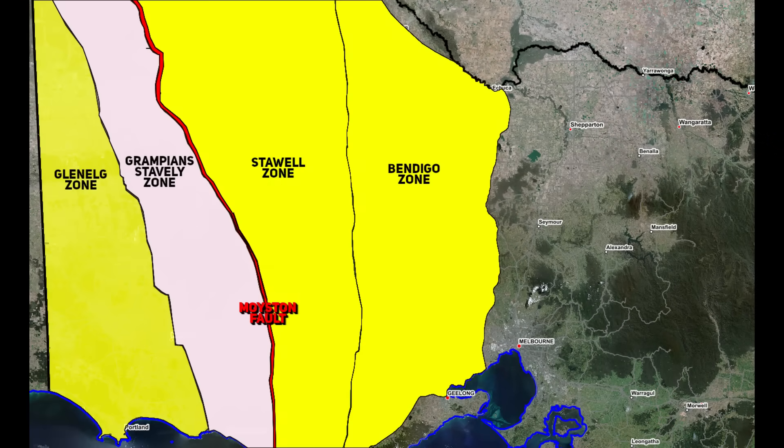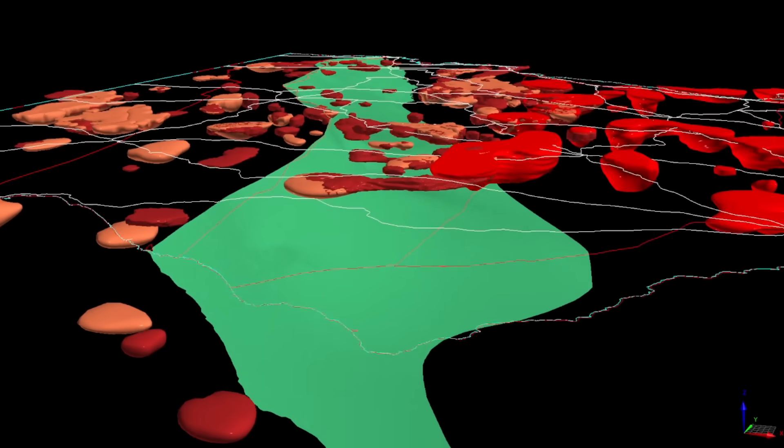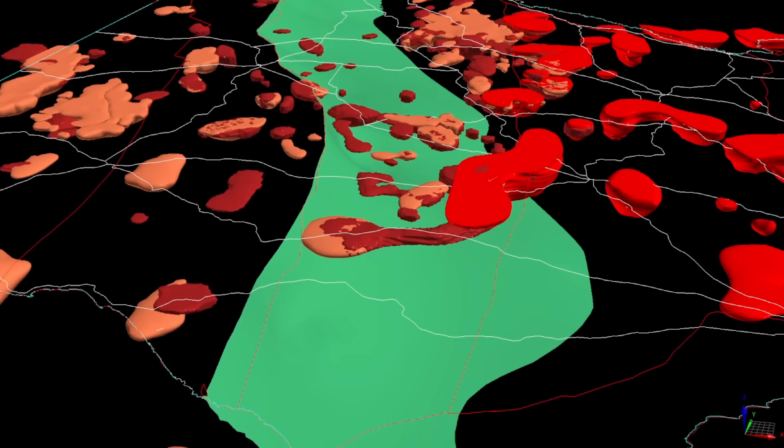What's even more interesting is the timing of all this. You see, the Moyston fault is one of the major fault lines in Victoria. It was created over 500 million years ago, during the Cambrian period, as a result of a dramatic tectonic collision.